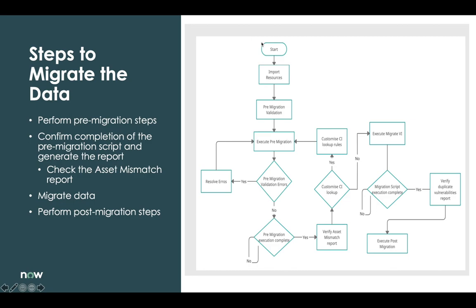These are the steps to migrate the data: import the resources from the knowledge article, then perform pre-migration validation by executing the scheduled job. Check pre-migration errors in the logs. If there are any errors, resolve them and re-run the pre-migration scheduled job. After errors are resolved, the pre-migration execution complete message will appear in the logs. Once the pre-migration job is complete, verify the asset mismatch report. If unsatisfied with the report, customize the CI lookup rules and re-execute the pre-migration.